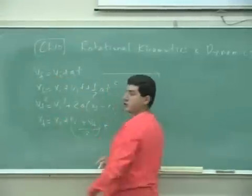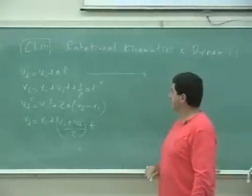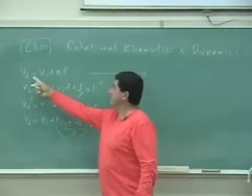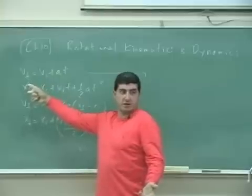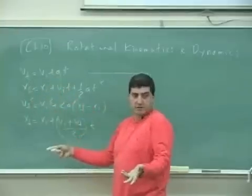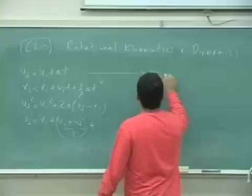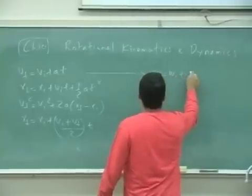The first equation is going to be everywhere that I see v, I'm going to put omega. Everywhere where I put a, I'm going to put alpha. You see? So I'm going to have omega final is omega initial plus alpha t.